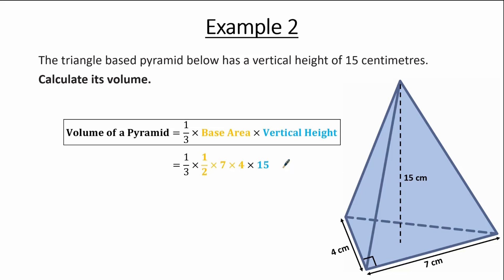Calculating this, we find that the volume of this pyramid equals 70 cm cubed — cm cubed because the units given are cm. So this is a different example to the previous one: again we find the volume of a pyramid, but instead of a square base, we have a triangle base.